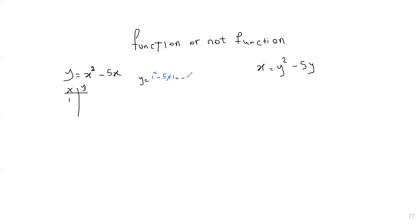1 squared minus 5 multiplied by 1 equals y, which is negative 4. So for one x, there is just one y. So this is a function. I say this is a parabola. For any parabola, the vertical line test passes through one point, so it's a function.